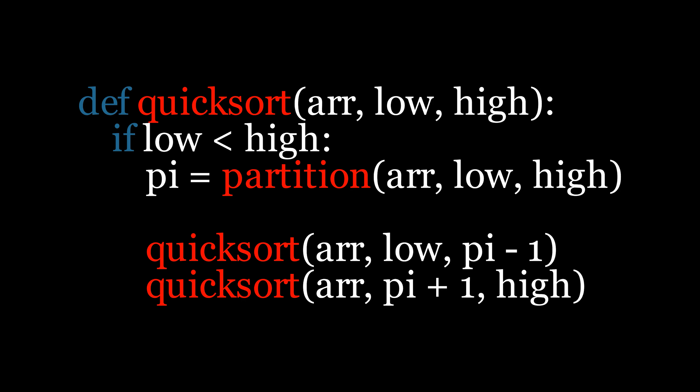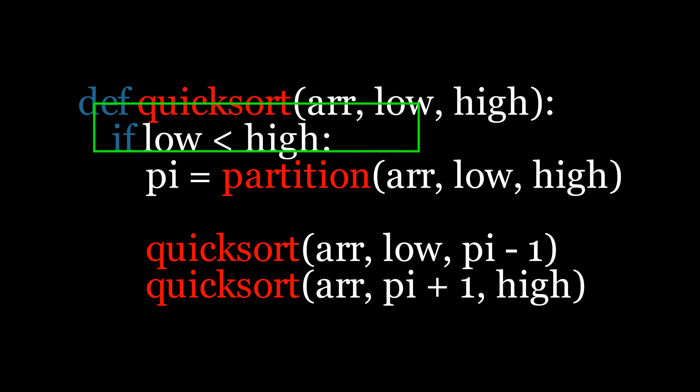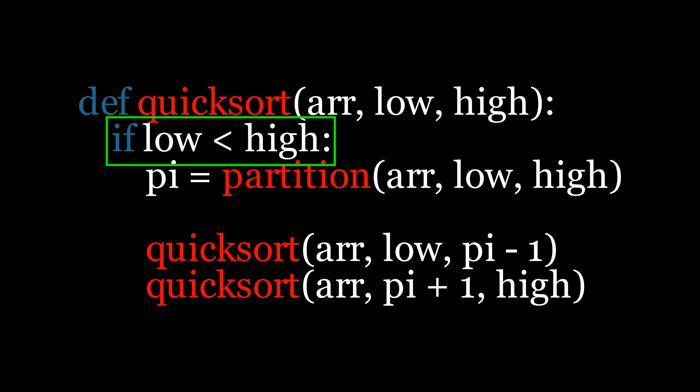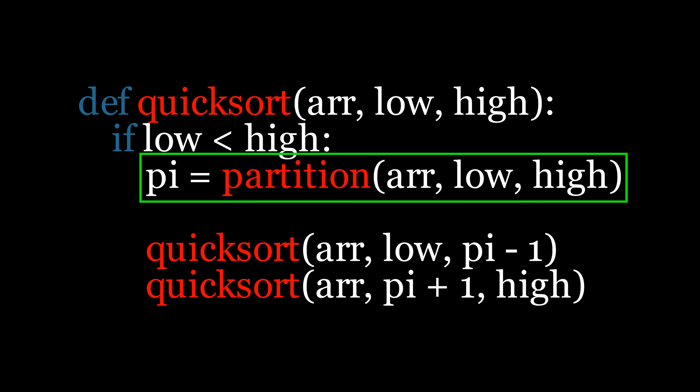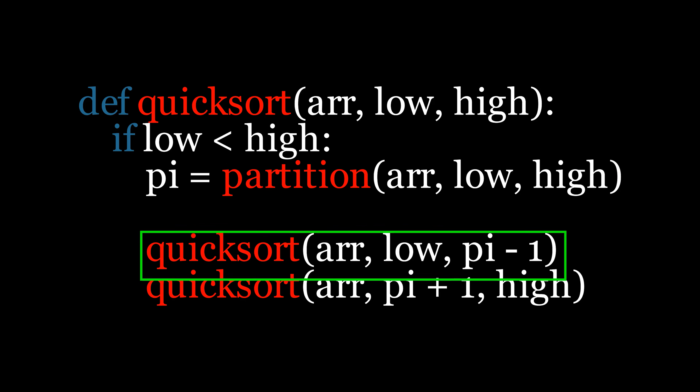Now, the code for quicksort is pretty simple. First, we define the quicksort function, which takes the input array and two parameters, low and high, representing the starting and ending indices of the current portion of the array. The base condition for recursion is when low is less than high, meaning there is more than one element in this portion to sort. If this condition is false, the recursion stops. Inside the recursive call, we invoke the partition function, which rearranges the elements so that all smaller elements are to the left of the pivot and larger ones to the right. It returns the index of the pivot, now in its correct position. After partitioning, we recursively apply quicksort to the subarrays on the left and right of the pivot.